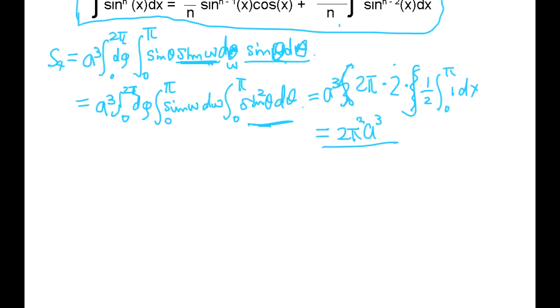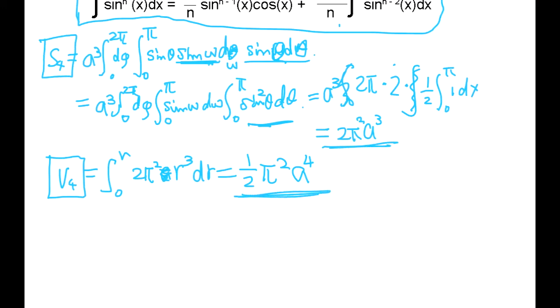Now, volume. Volume is simply integrate 2π² r³ dr from 0 to A. So it's going to be 1/2 π² A to the fourth. So this is four-dimensional world sphere's volume, and this is the surface.